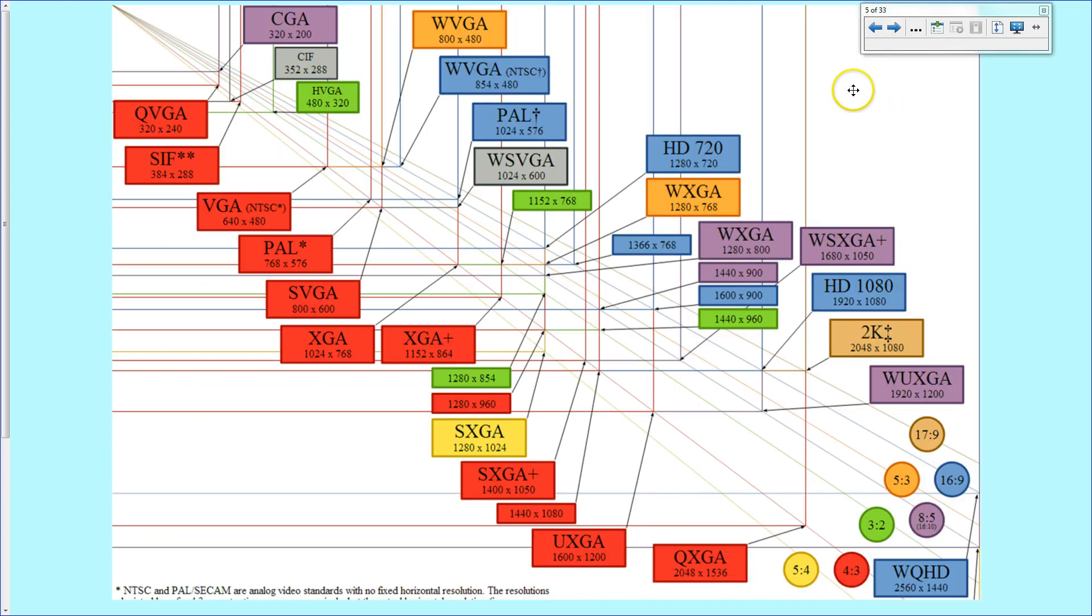Just to give you an idea of how complicated it is, this is a graph of all the different standards that different devices use in terms of how many pixels across and how many pixels tall. Now, you might notice that they're color coded. All of these ones in red are a standard normal TV screen that is a four by three ratio and that is normal, not widescreen mode.